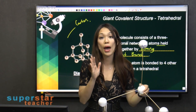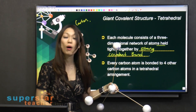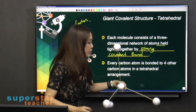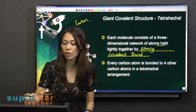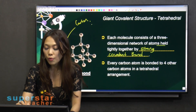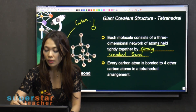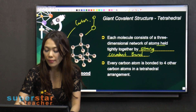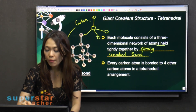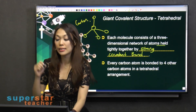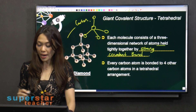You must bear in mind that in the exam, you are required to learn how to draw the tetrahedral shape. Remember, one circle on top and then three branching out — we call this a tetrahedral shape.